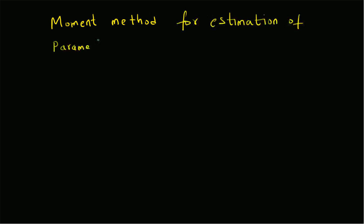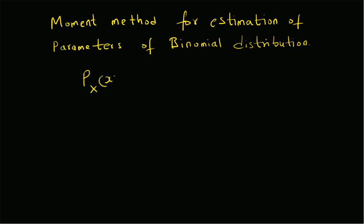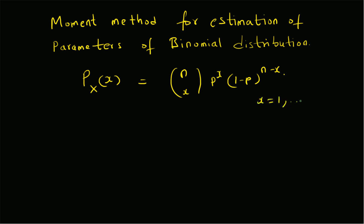Hello, welcome. In this short video, let us look at the application of the method of moments for estimation of the parameters of the binomial distribution. The binomial distribution is defined with the probability mass function equal to nCx times p^x times (1-p)^(n-x), where the values of x range from 1 to n.